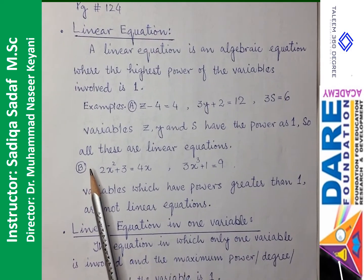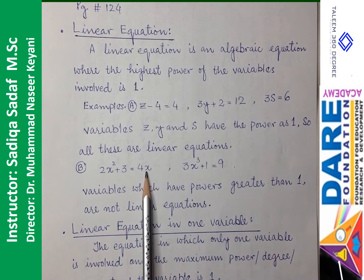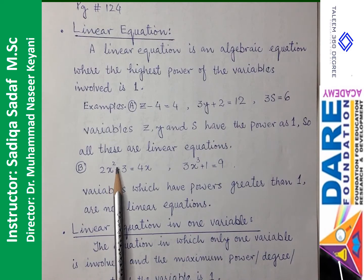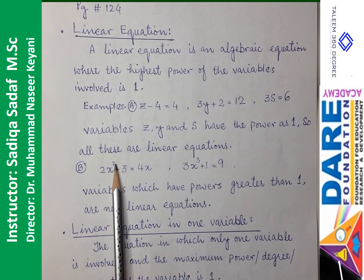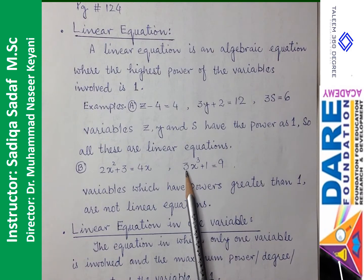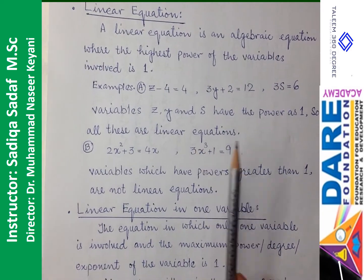Doosri examples — 2x square plus 3 is equal to 4x: variable x hai, lekin is x ki power 2 hai aur is x ki power 1 hai, to highest power 2 ho gayi. Linear equation mein highest power 1 honi chahiye, isliye yeh linear equation nahin hai. 3x cube plus 1 is equal to 9: x ki highest power cube 3 hai, isliye yeh bhi linear equation nahin hai.